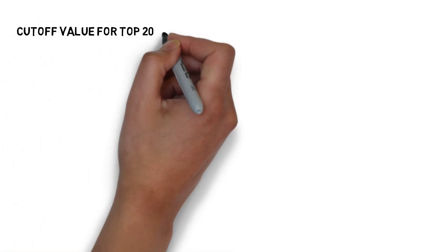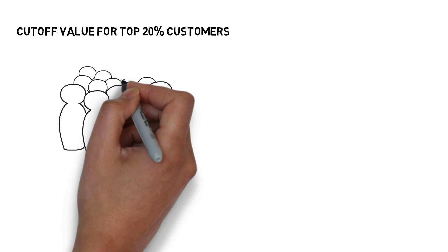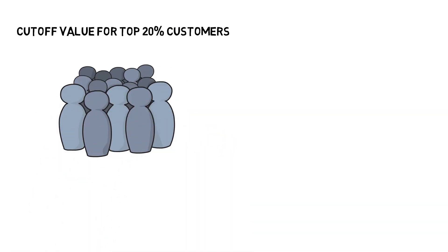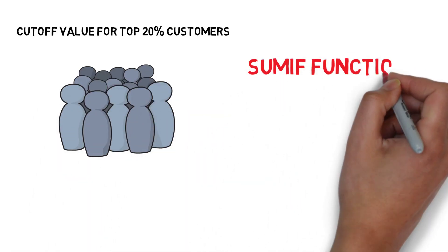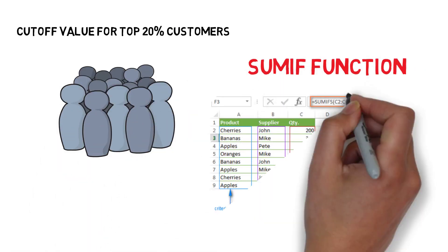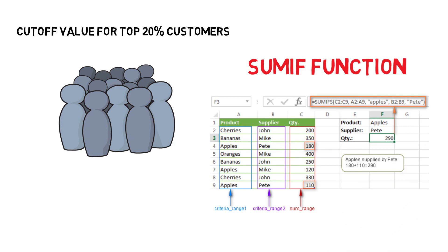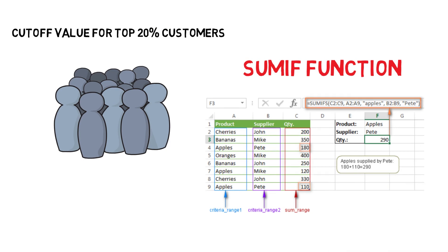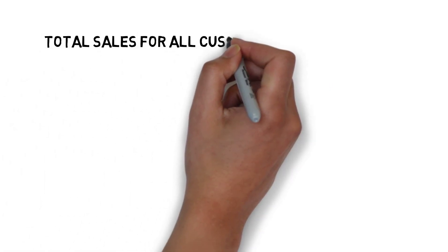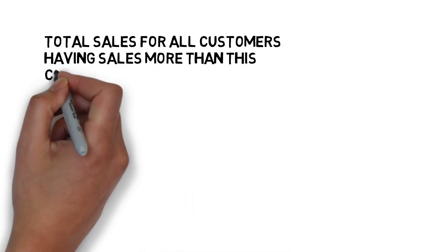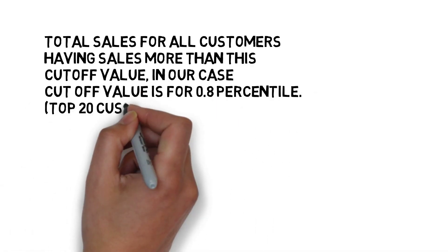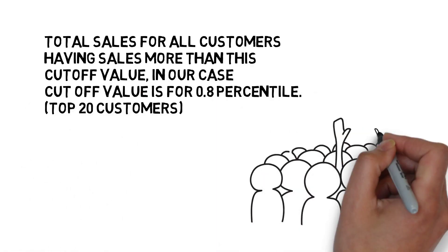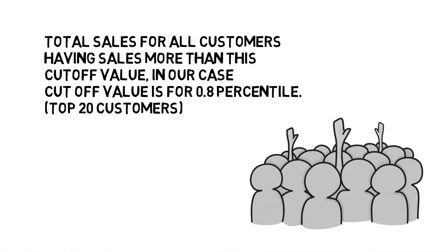Once we find the cutoff value for top 20 percent customers, we will use the SUMIF function. We are using SUMIF to find total sales for all customers having sales more than this cutoff value. In our case, the cutoff value is for the 0.8 percentile.